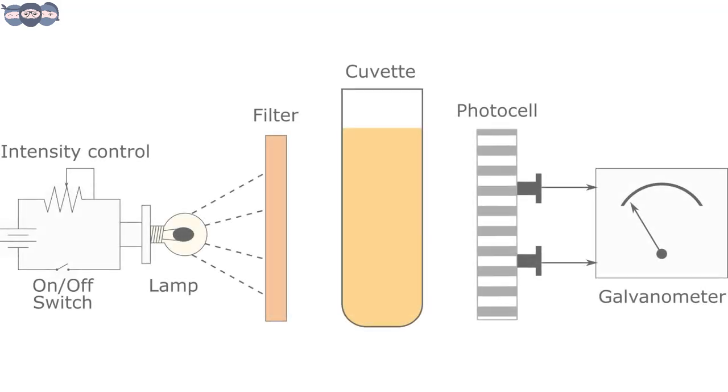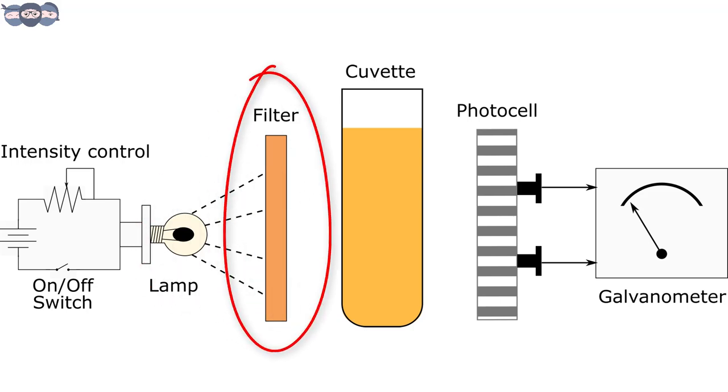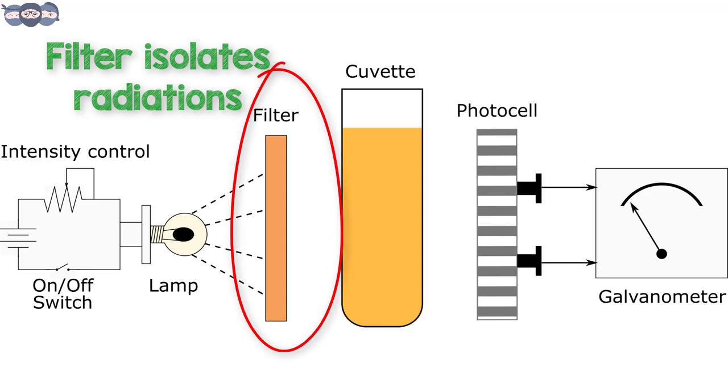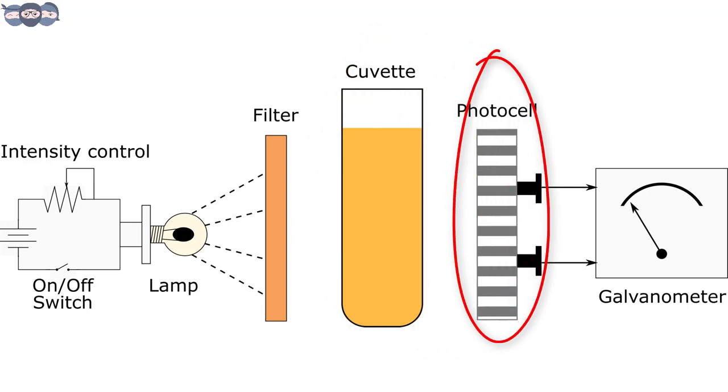As seen in the diagram, we can start with the construction of this instrument. The basic components of a single beam filter photometer are a light source, an absorption or an interference filter. It is called a photometer because the device that is used for isolating the wavelengths here is a filter. A cuvette is used as a sample holder and a photoemissive or a photovoltaic cell acts as a detector.